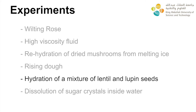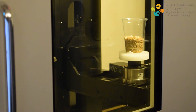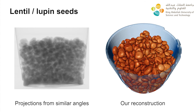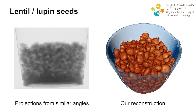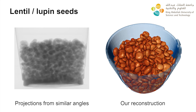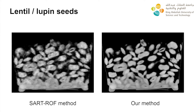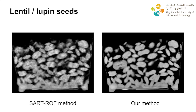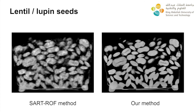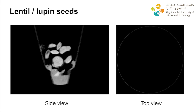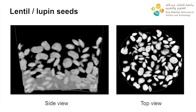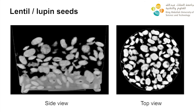Now we present our reconstruction of a mixture of lentil and lupin seeds soaked in water. This scanning process lasted 5 hours and 12 minutes. We illustrate here on the left a rapid succession of projections acquired during the scanning process from similar viewing angles. On the right side, a 3D rendering of the seed's motion is given for approximately the same angle. Our reconstruction method is compared to the baseline method using slice visualizations. We also show two slice visualizations obtained with our reconstruction method for the same time step.